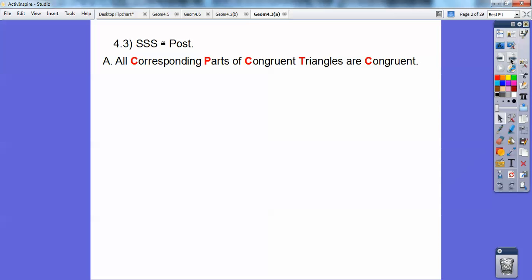All corresponding parts of congruent triangles are congruent. We use that statement a lot. I just memorized it as CPCTC, which means corresponding parts of congruent triangles are congruent. We'll use that a lot.